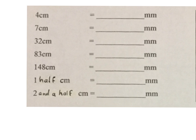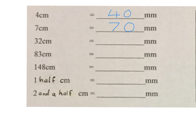The first conversion is 4 centimeters to millimeters. The question you must ask is: who's the big one and who's the small one? The centimeter is the big one, the millimeter is the small one. You know that one centimeter is 10 millimeters. Do I have centimeters to convert? Yes — so 4 centimeters makes 40 millimeters. Next: 7 centimeters. The centimeter is the big one, the millimeter is the small one.